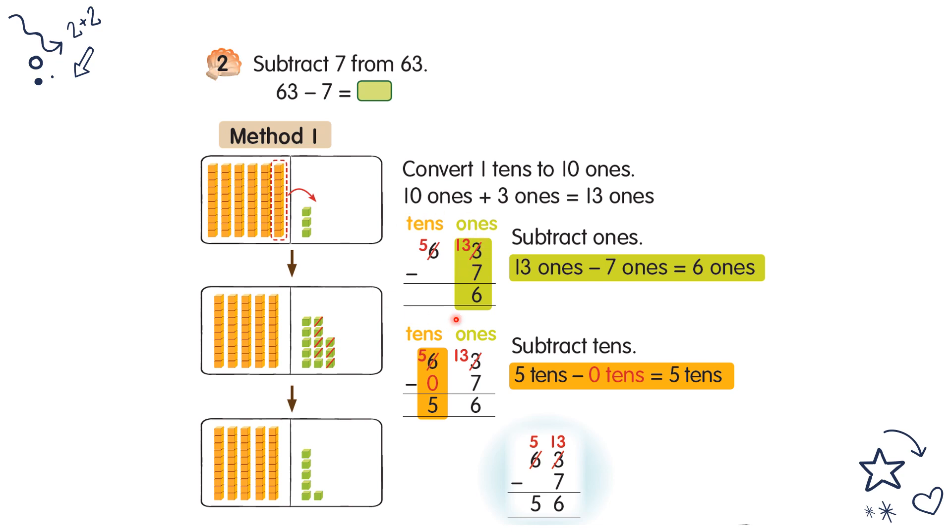Now method one, you can do in column form like this: 63 minus 7. You see, 3 cannot minus 7, isn't it? 3 is not enough to minus 7, so not enough. You have to borrow from tens. 6 borrow 1, left 5. So here becomes 13. 13 minus 7 is 6, so 5 write down 5. Your answer is 56.